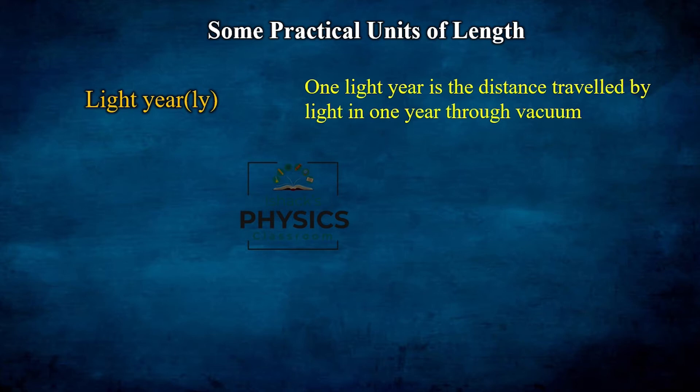One light year is the distance traveled by light in one year through vacuum. The speed of light is 3 × 10⁸ meters per second. Note that light year is a unit of length, not a unit of time — even though it contains the word 'year.' It is the distance light covers in one year.